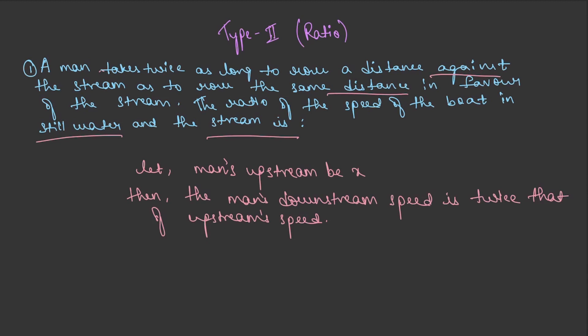Writing this in the numerical form, this is what is given in the first part of the question. Now upstream as we've already assumed it to be b in the earlier video, and downstream is a. Now the ratio of speed of boat in still water and the stream...